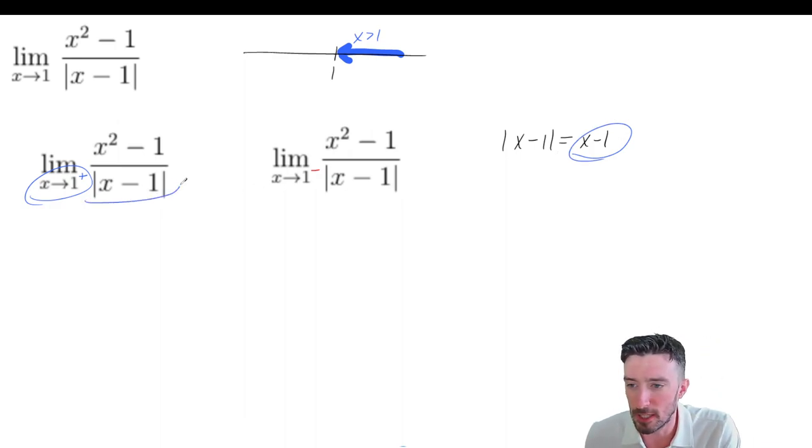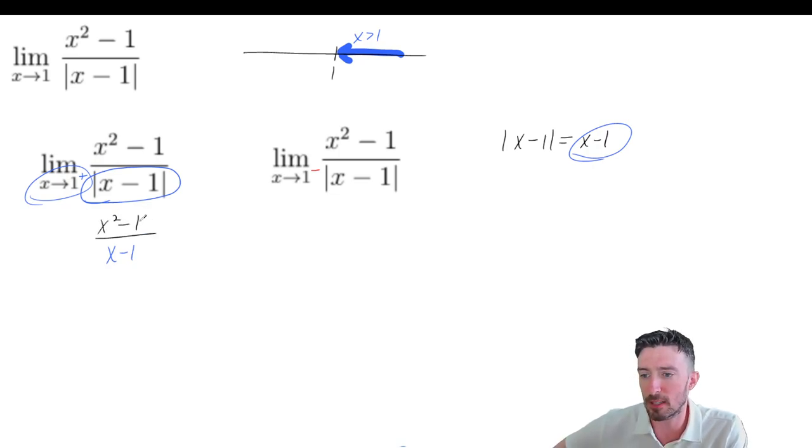So I'm going to take this bottom here, I'm going to replace it with x minus one. And on the top, it's got x squared minus one. And we still have to talk about the limit as x approaches one from the right. Now, before we finish off with that, let's talk about what's happening when we're approaching one from the left.